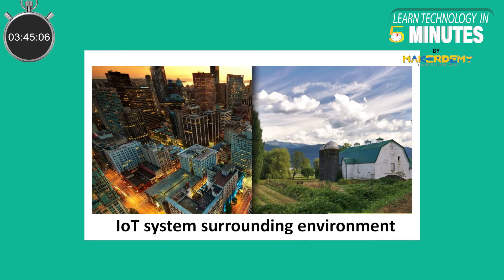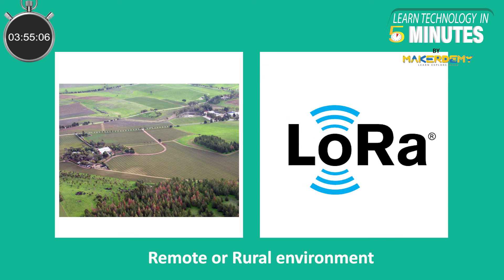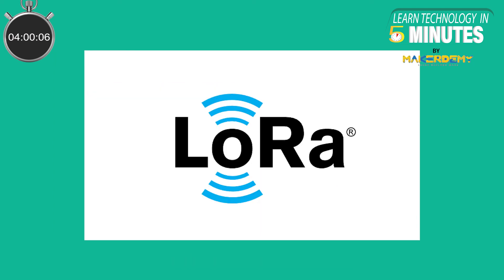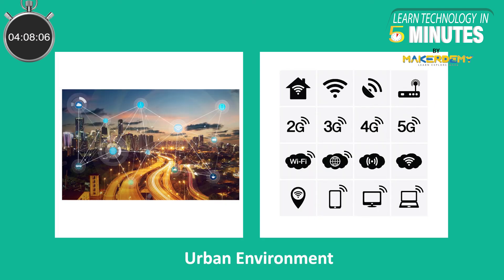Moving forward, what if we need a very long range of data transmission for small amounts of data? In what environment will the system be deployed? If your project is meant to be deployed in rural areas, the best choice of wireless technology would be LoRa. LoRa or long range wireless technology offers low data rate but long range and low power communication. On the other hand, if you are planning to deploy your system in an urban environment,